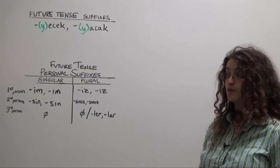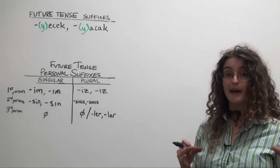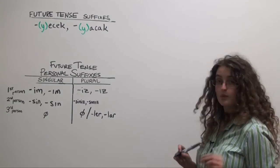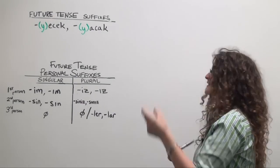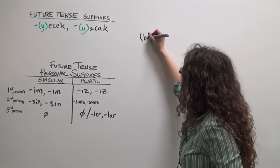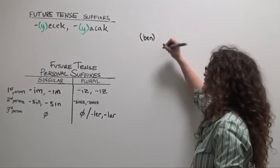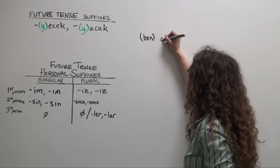Let's see how it works. For our example verb, let's use gelmek, to come. We'll start with our verb stem gel. Ben, optional pronoun, I, gel.